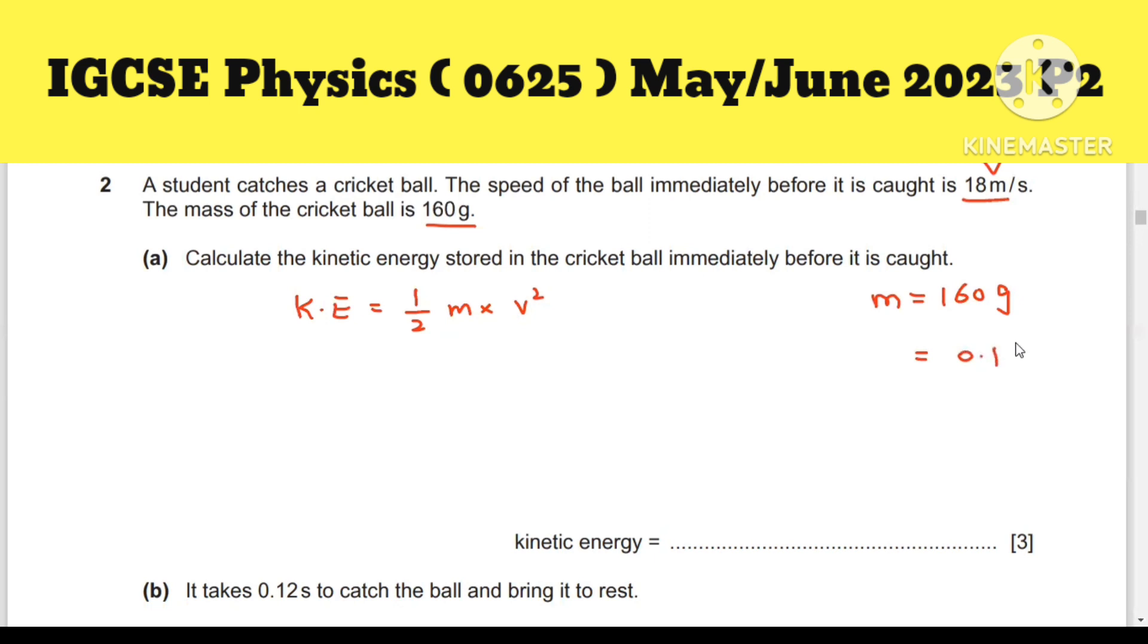Mass equals 160 grams or 0.16 kg as a unit, and speed is 18 m/s. So put the values: 1/2 × 0.16 × 18^2. After calculation we get 25.92 joules. But we have to write the answer in two significant figures, so it's 26 joules. You will get three marks.